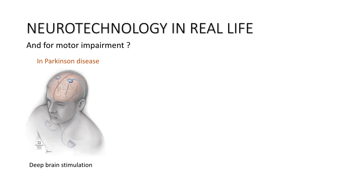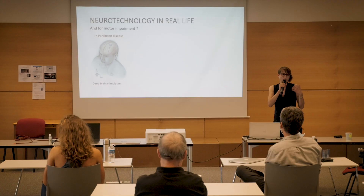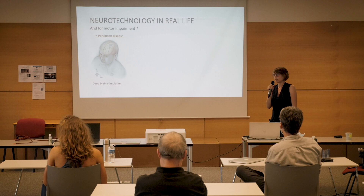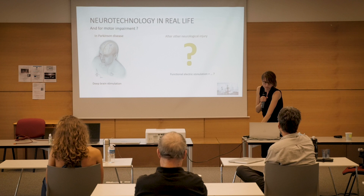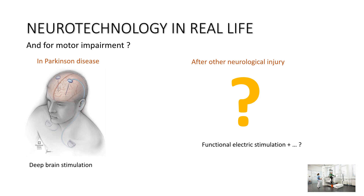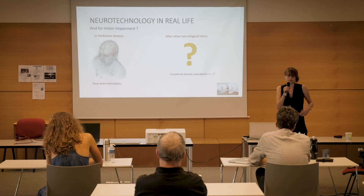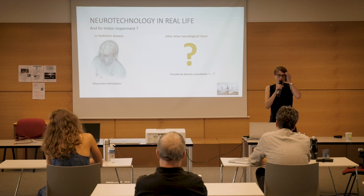For motor impairment, there is something quite useful: deep brain stimulation in Parkinson's disease. You have two electrodes near the central part of the brain that aim, with stimulation, to reduce the tremor and also the dyskinesia that is really harmful for patients with Parkinson's. But for other neurological injuries, you do not really have neurotechnology — it's the beginning of some exoskeletons that try to use a bioelectric signal, but it's really the beginning. We really have very few devices available.